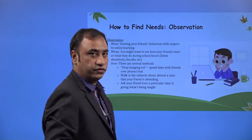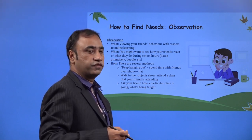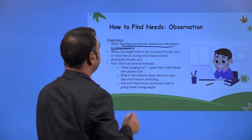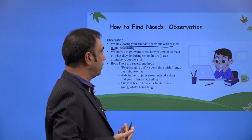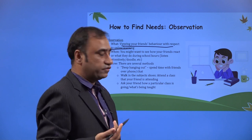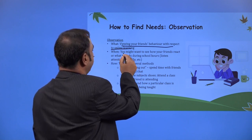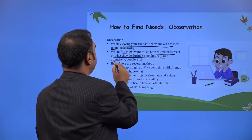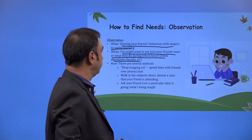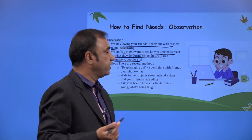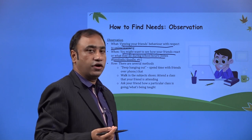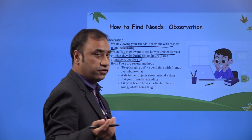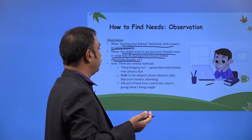To find needs through observation, we need to follow the process of observation. Viewing your friend's behavior with respect to online learning — here we are taking an example of online learning and doing an observation exercise. You might want to see how your friends react or what they do during school hours: listen attentively, doodle, etc. See your friend's behavior — what they are doing when online classes are going on.